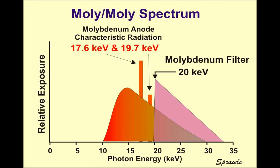Different from the filters discussed in the previous video, here we're focusing on filtering the higher energy X-rays. Although it's a different perspective, you're still trying to accomplish the same end goal: to tailor your X-ray beam for your imaging task. In mammography, if we don't control higher energy beams, that higher energy may reduce contrast. This matters greatly because mammography is very sensitive — we're dealing with very small calcifications.